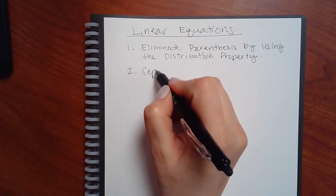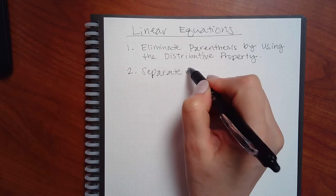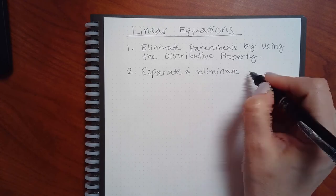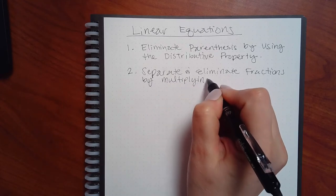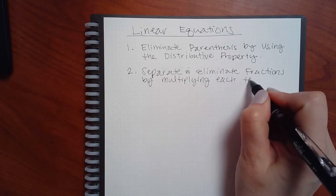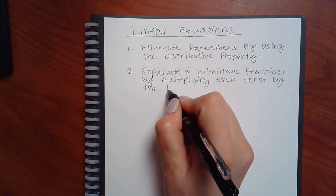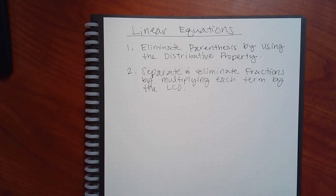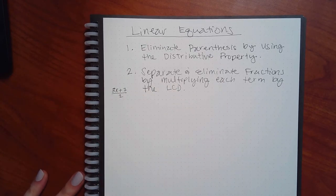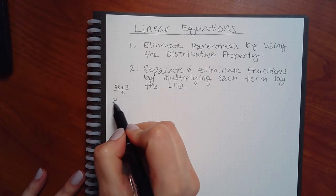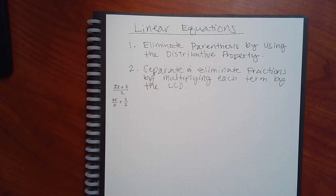Step two is to separate and eliminate fractions by multiplying each term by the LCD — the least common denominator. The reason I say 'separate' is because sometimes you might see something like (3x + 7)/2, and you need to write 3x/2 and 7/2 separately before you start multiplying each term by the common denominator. That makes it a little easier to work through. I'll give you the example on how to eliminate once we get to the example part.